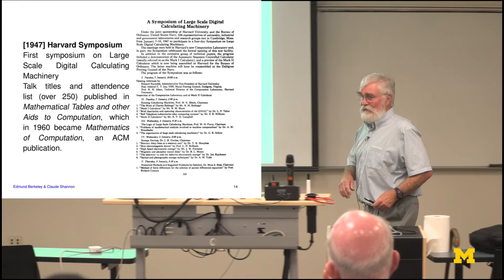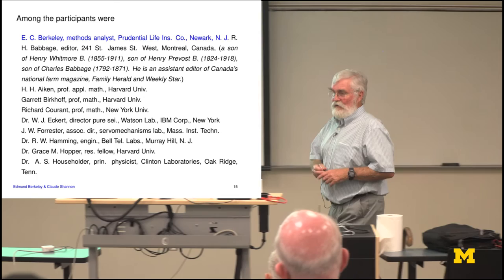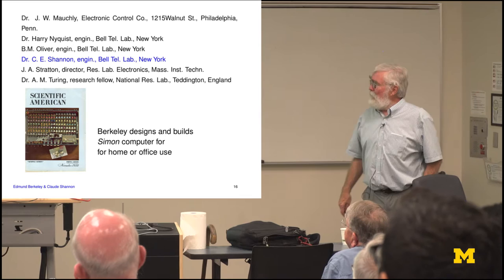I like the list of participants; I put Berkeley and Shannon in blue because they actually met there. Also present were Aiken, Birkhoff's son, Courant, Eckert, Jay Forrester, Hamming — well known to information theorists — Grace Hopper, Householder of the Householder transformation, Mauchly, Harry Nyquist, Oliver who co-wrote the classic paper with Shannon on PCM, Julia Stratton who was later president at MIT, and of course Turing. It's interesting that Turing came over for that.